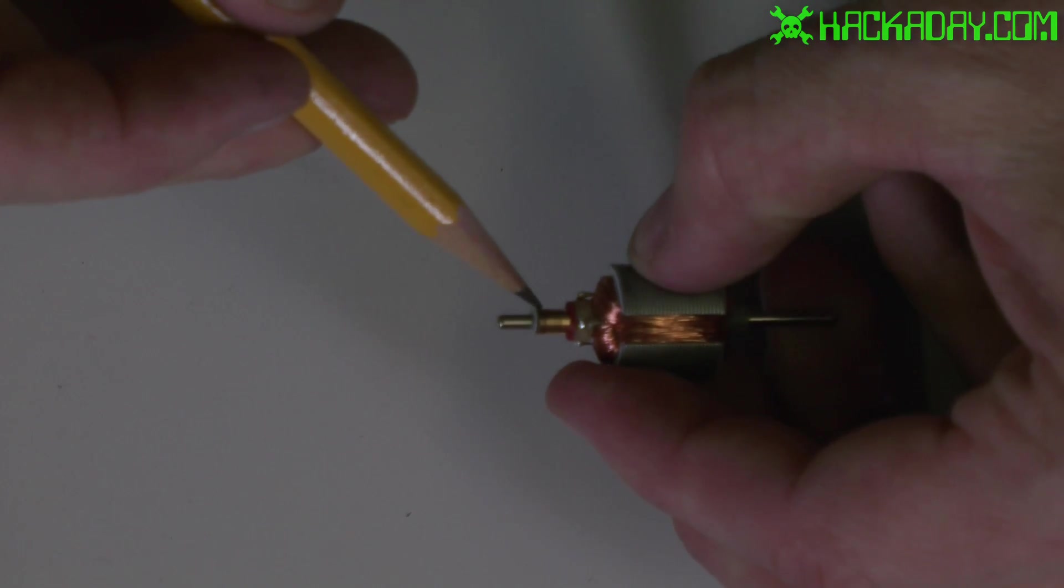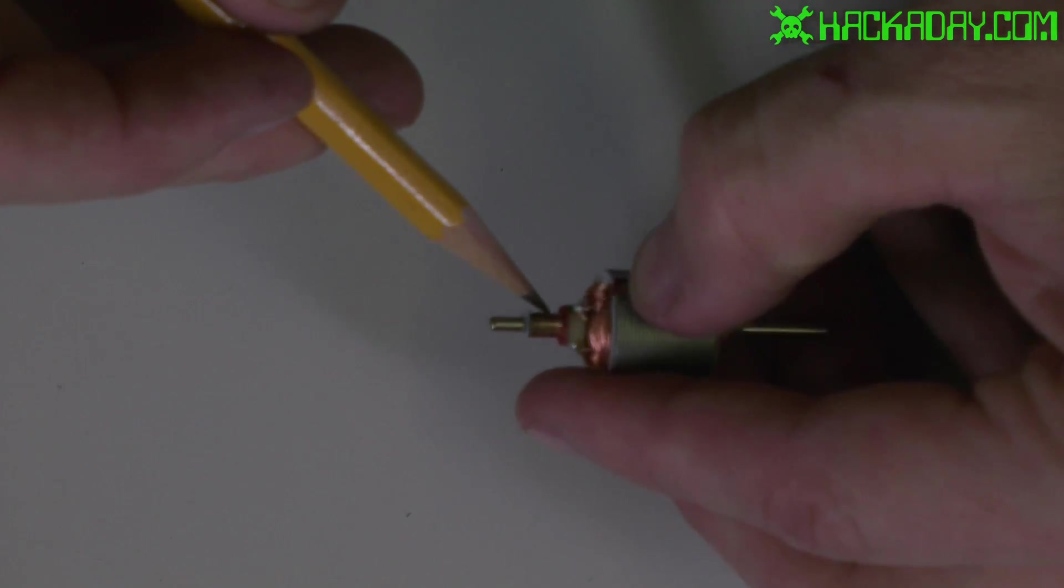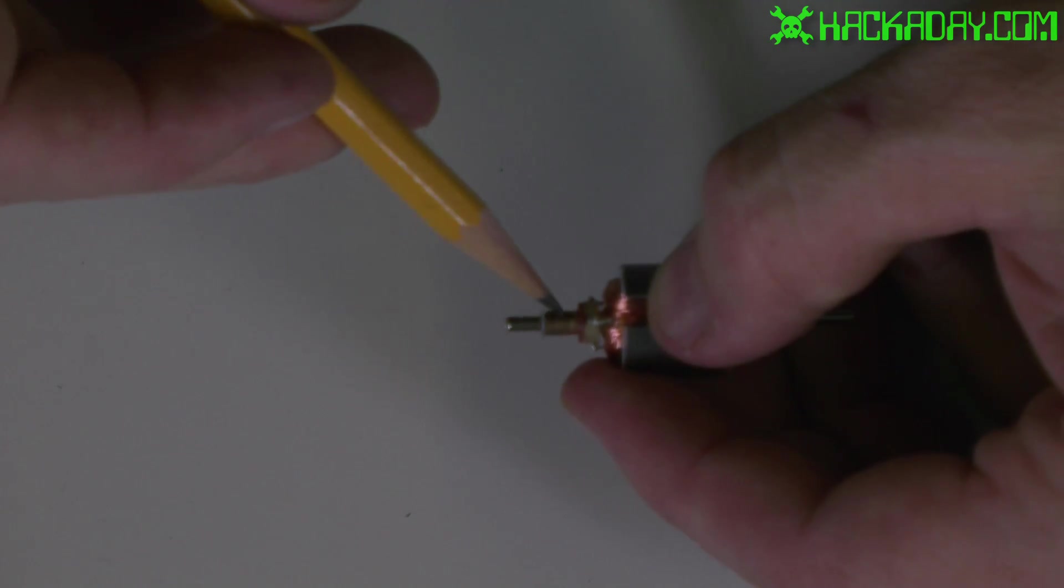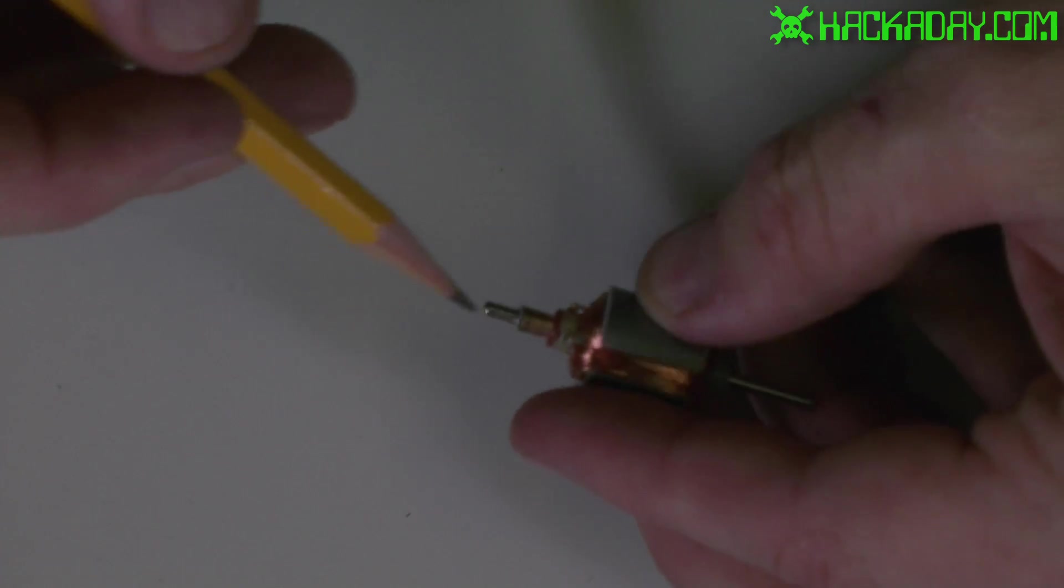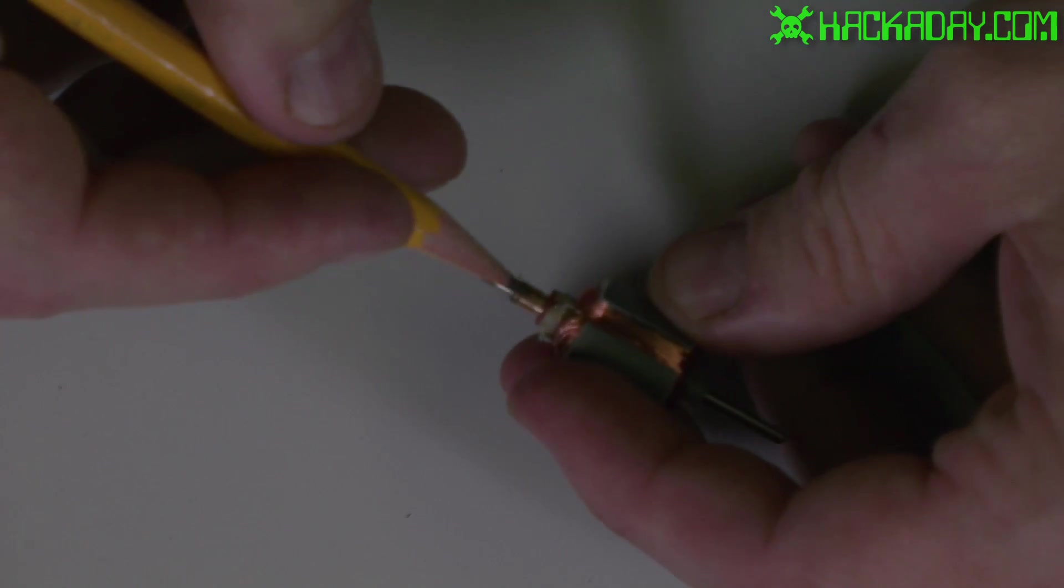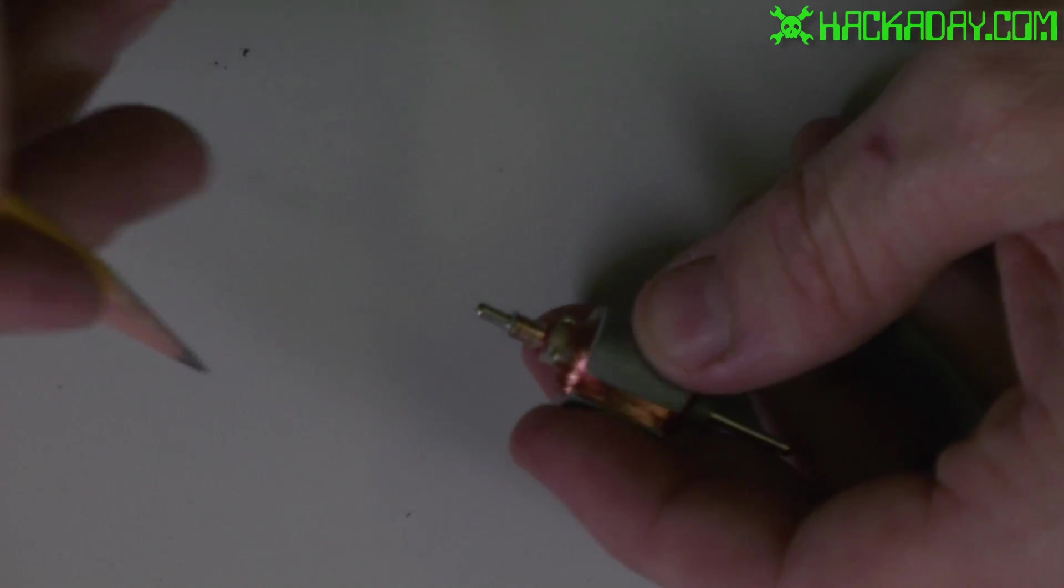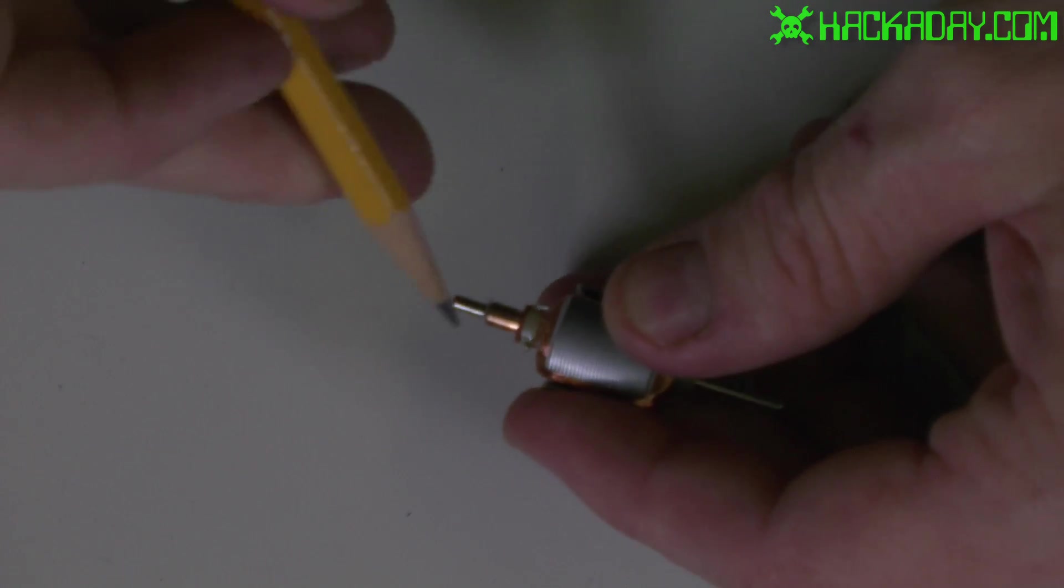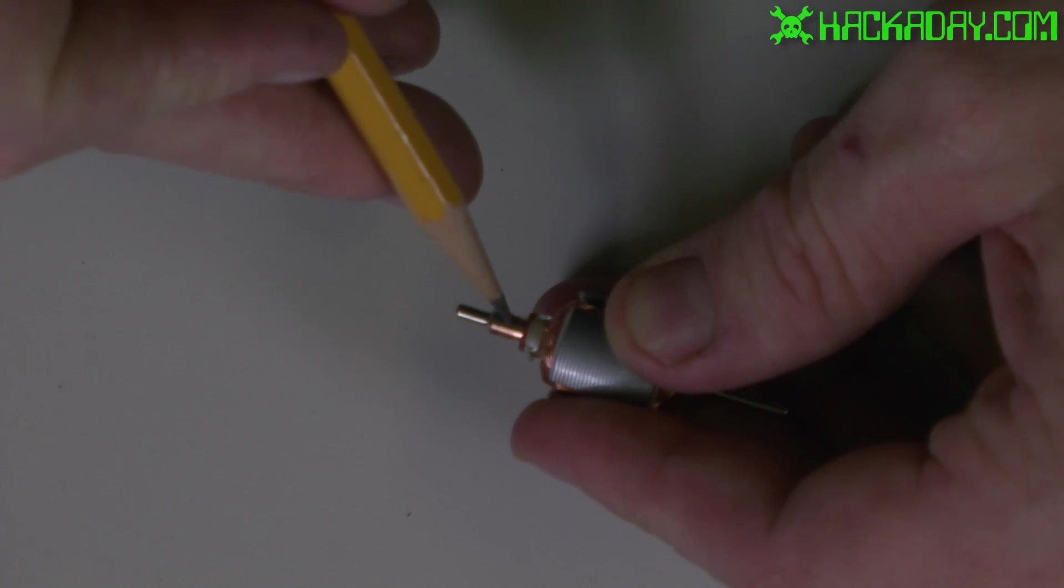Right here is the commutator of the motor and in this motor it has three poles which mean it has three separate places that it can touch and make contact with. I don't know if you can see that in the video here but we've got a little dividing line between the two pieces of copper here.